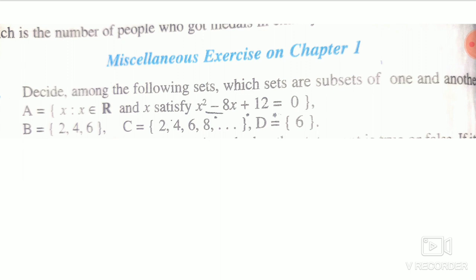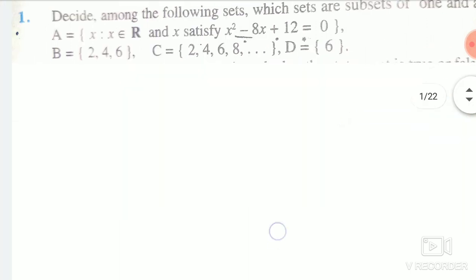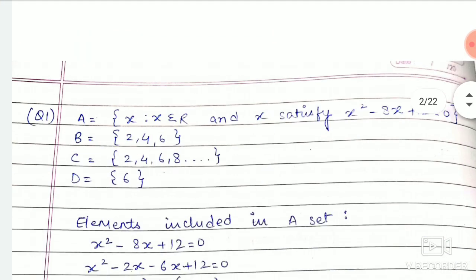solve and check the sets. Set A: x belongs to R, x satisfies x²-8x+12=0. Set B: 2, 4, 6. Set C: 2, 4, 6, 8, and